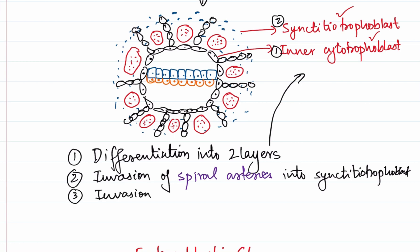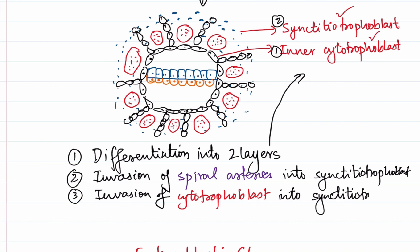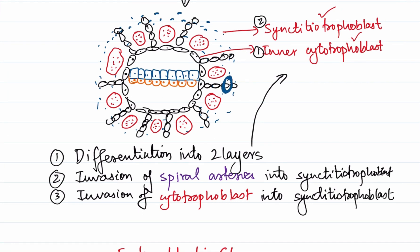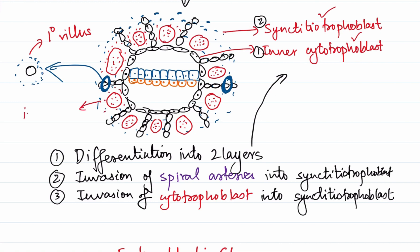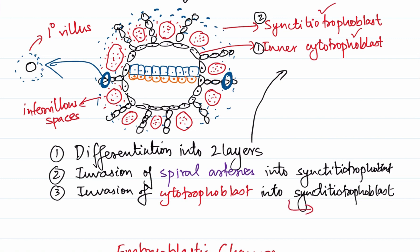The cytotrophoblast invades into the syncytiotrophoblast. If we take a cross section, we find a cytotrophoblast surrounded by a layer of syncytium — this structure is called the primary villus. The spaces present around these villi, filled with the lacunae from the spiral arteries, are called the intervillus spaces. So the invasion of cytotrophoblast into the syncytiotrophoblast leads to the formation of the primary villus.